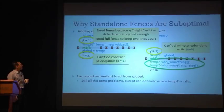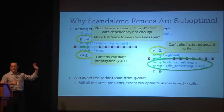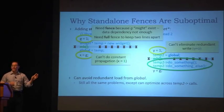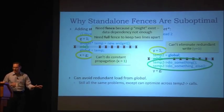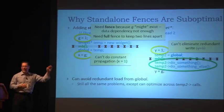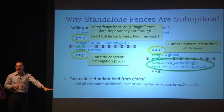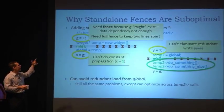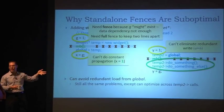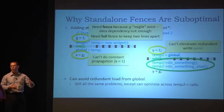A couple of questions came up during the break. These last series of slides was called 'why standalone fences are suboptimal.' The question that arose was: does this mean we shouldn't use them? The answer is yes. The key takeaway is: avoid standalone fences because they're very heavyweight and they prevent more optimizations than they need to. So they cost more in synchronization and they cost more in optimization.